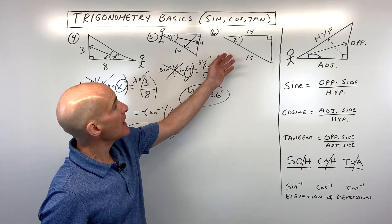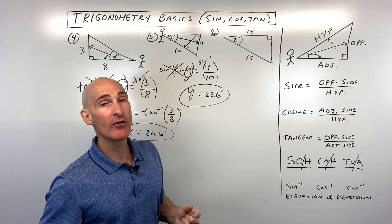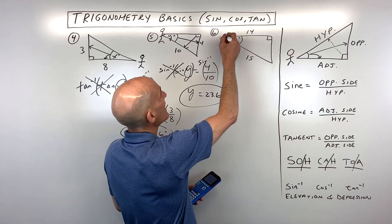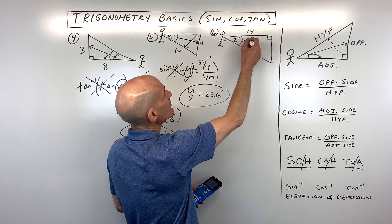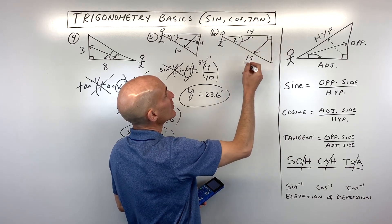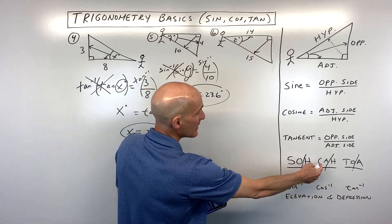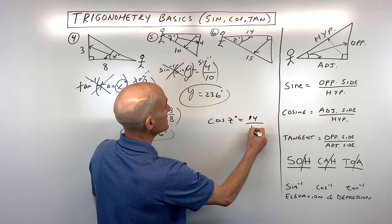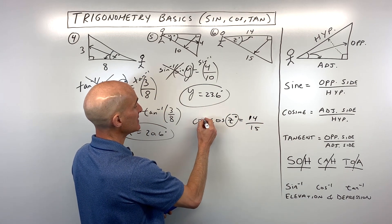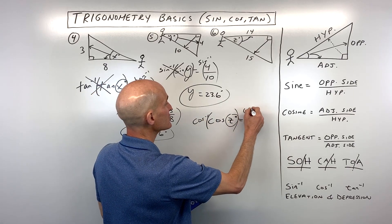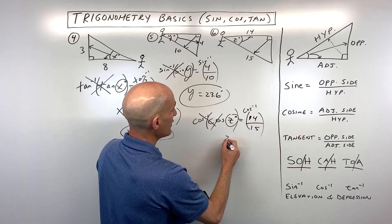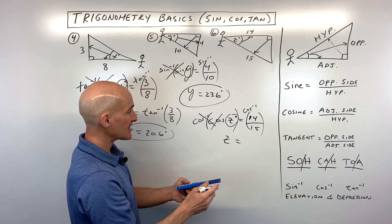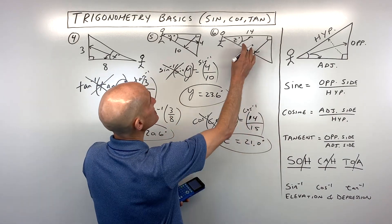For the last inverse example, positioning ourselves at the angle, we've got the adjacent side and the hypotenuse — that's cosine. So the cosine of angle z equals adjacent fourteen over hypotenuse fifteen. Taking the cosine inverse of both sides gives us angle z by itself. Going to the calculator, cosine inverse of 14 over 15 comes out to 21.0 degrees.